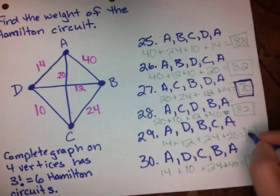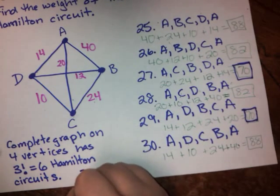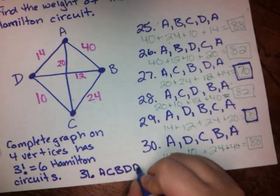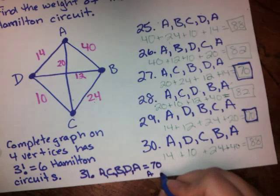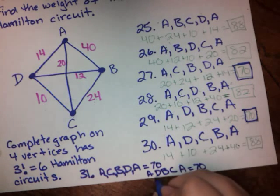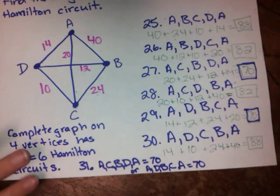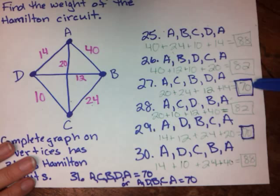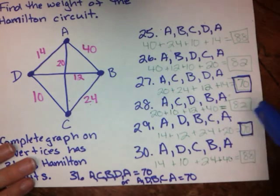The lowest cost are these two that are 70. So the optimal solution for number 31 is going to be either A, C, B, D, A, and that one equaled 70. Or the reverse of that, A, D, B, C, A, that equals 70 as well. So to find the optimal solution using the brute force method, we did the brute force method. We looked at every single possible Hamilton circuit in that graph and found out that the optimal solutions were A, C, B, D, A or going in the opposite direction, A, D, B, C, A.